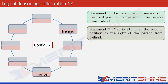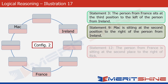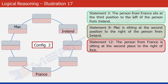Statement 9 says Mac is at the second position to the right of the person from Ireland. With Ireland's position established, we place Mac two positions to its right. Statement 12 says the person from France is at the second place to the right of Rick, which means Rick is at the second place to the left of France. France is already on the table, so we place Rick accordingly.